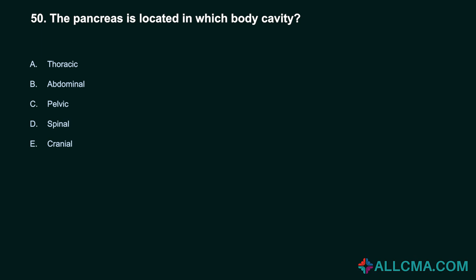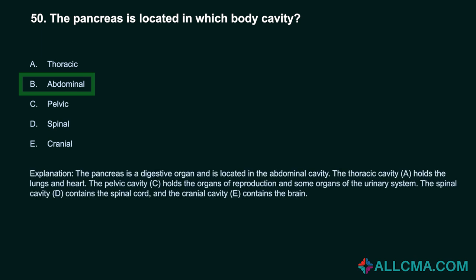Question 50: The pancreas is located in which body cavity? a) thoracic, b) abdominal, c) pelvic, d) spinal, e) cranial. Correct answer: B, abdominal. The pancreas is a digestive organ located in the abdominal cavity. The thoracic cavity holds the lungs and heart. The pelvic cavity holds the organs of reproduction and some urinary organs. The spinal cavity contains the spinal cord. The cranial cavity contains the brain.